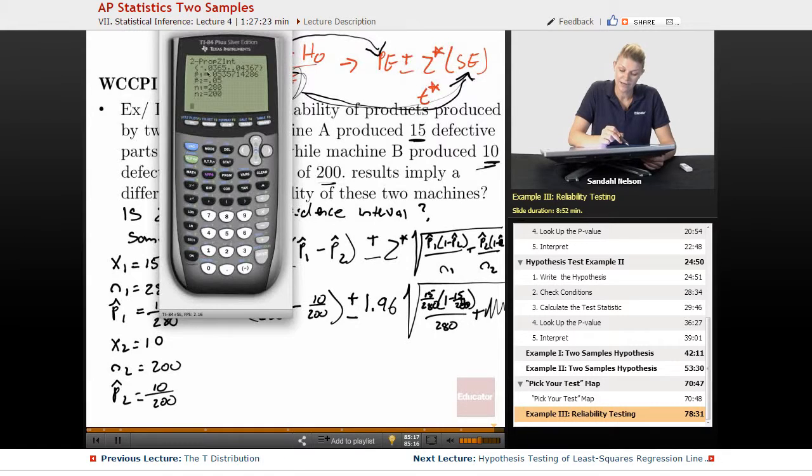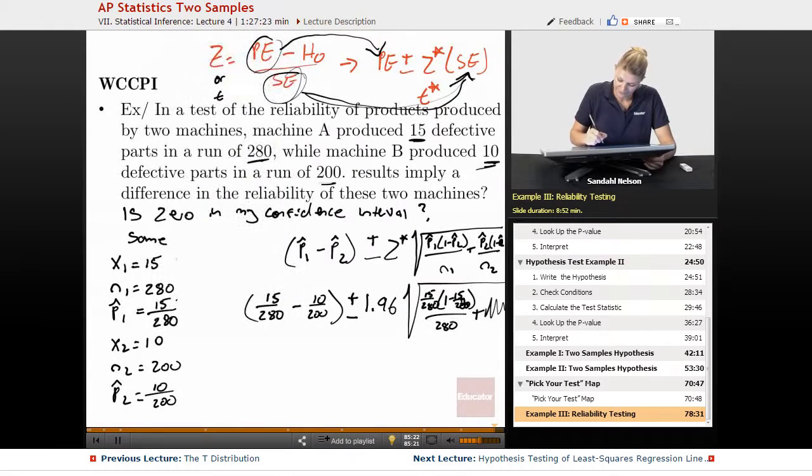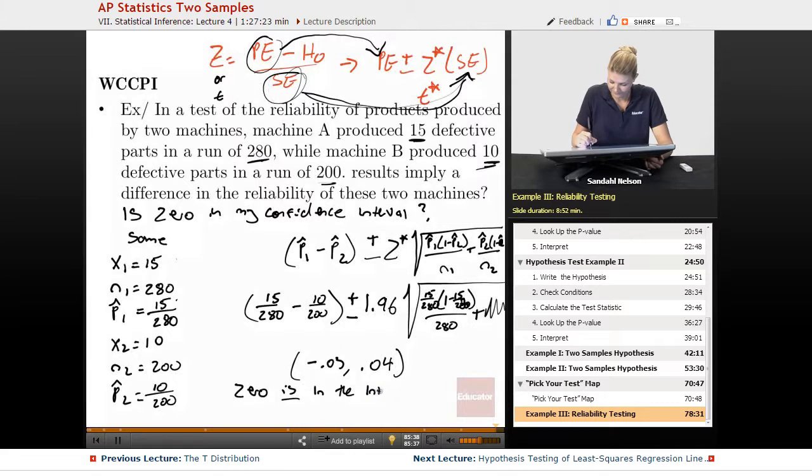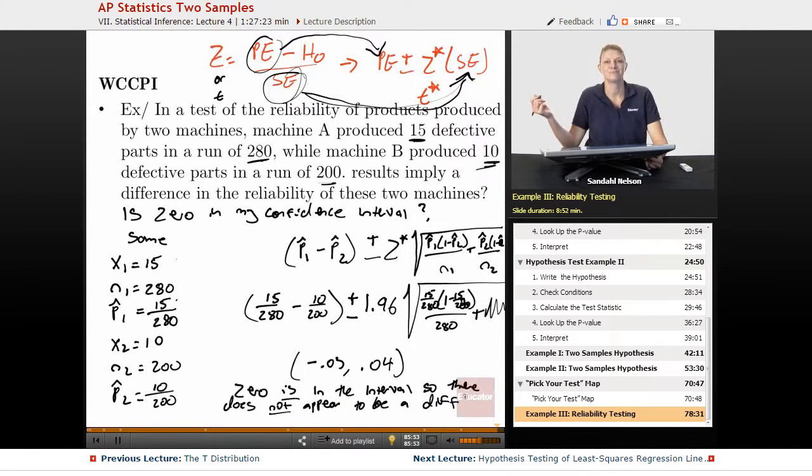So it's negative 0.03 to positive 0.04. Notice that 0 is in the interval. So there does not appear to be a difference. Perfect. No problem.